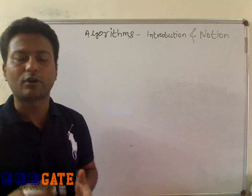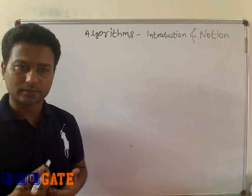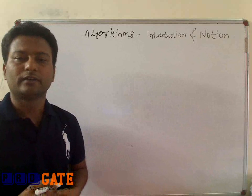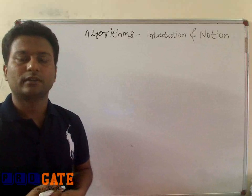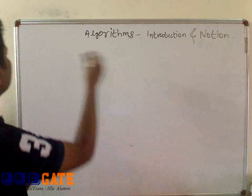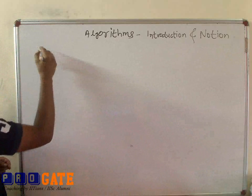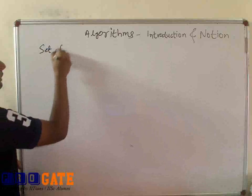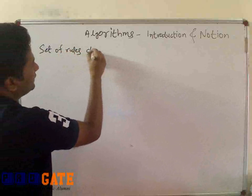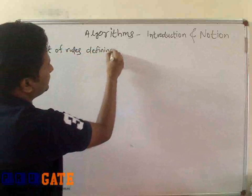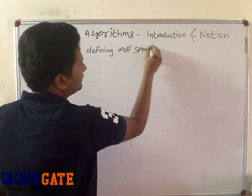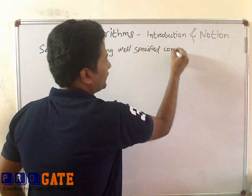Can we come up with a formal definition of the algorithm? Is it really that easy to come up with a definition of algorithm? So let us start with the first attempt, which is the semi-formal definition of algorithms. That definition is: what is an algorithm? It is a set of rules defining well-specified computations.